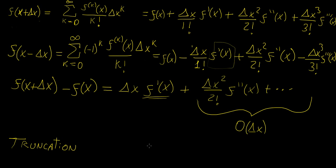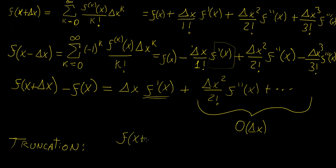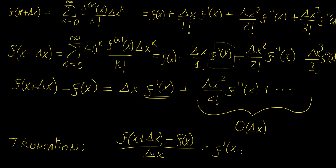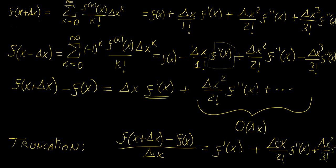To solve for f prime of x, we divide both sides by delta x, giving us: f(x + Δx) minus f(x) over delta x equals f prime of x plus the remaining terms. Dividing by delta x reduces all powers by one, so the delta x squared term becomes delta x to the first power, and the delta x cubed term becomes delta x squared over 3 factorial times f triple prime, and so on.